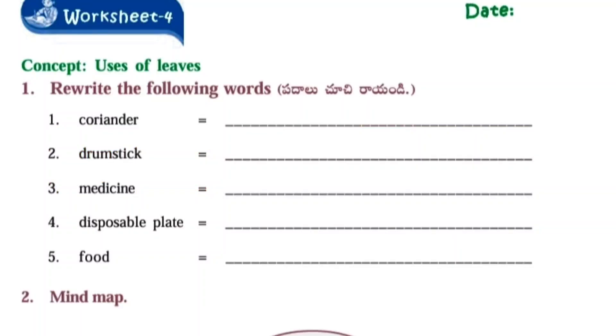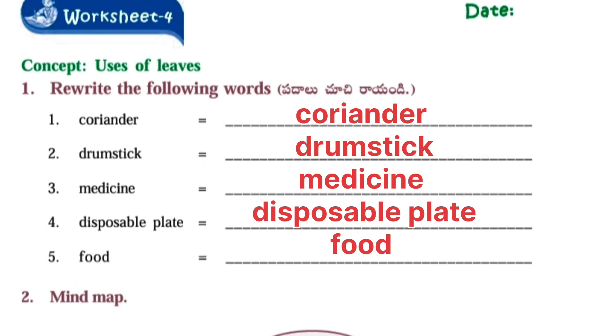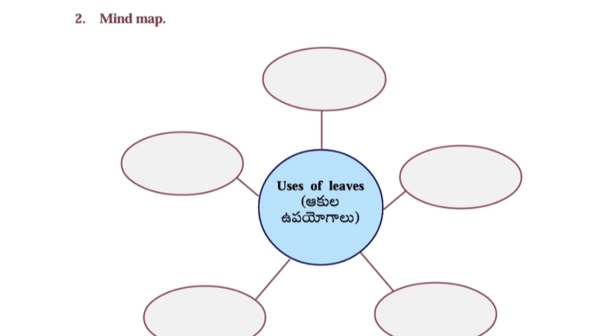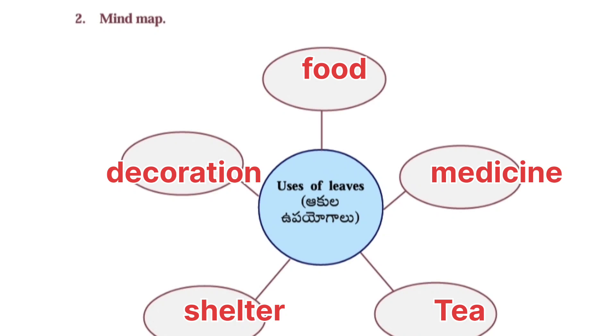Next worksheet number four: Concept uses of leaves. Rewrite the following words: coriander, drumstick, medicine, disposable plate, food, medicine, tea, shelter and decoration. We use leaves for food, medicine, tea, shelter, decoration, etc.